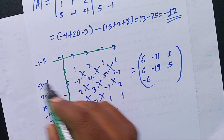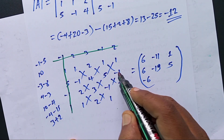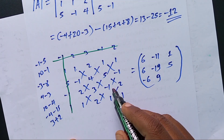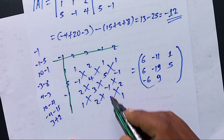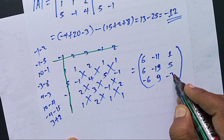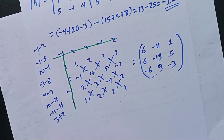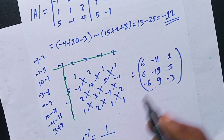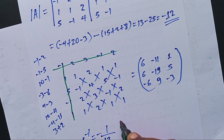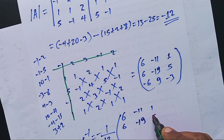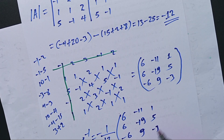2 times 5 is 10. Minus 1 times minus 1 is 1. 10 minus 1 is 9. 1 times minus 1 is minus 1. 1 times 2 is 2, minus 2. Minus 1, minus 2, which is minus 3. The adjoint gives us the inverse. 1 over our determinant, which is negative 12. The determinant is negative 12. Negative 1 over 12, times this adjoint: 6, minus 11, 1, 6, minus 19, 5, minus 6, 9, negative 3.